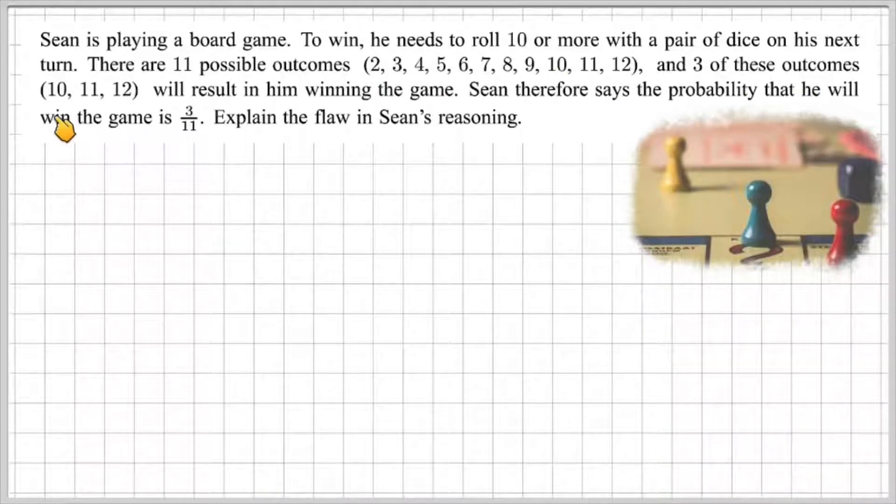And three of these outcomes, 10, 11, and 12, will result in him winning the game. Sean, therefore, says that the probability that he will win the game is 3 out of 11. Now explain the flaw in Sean's reasoning.